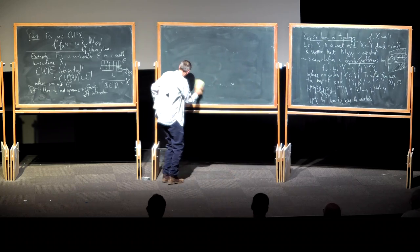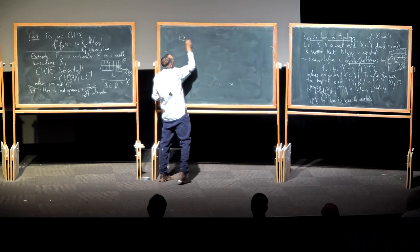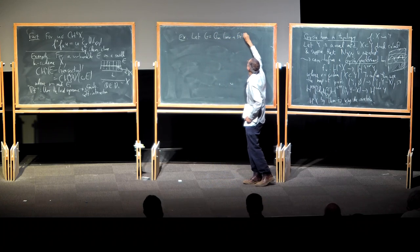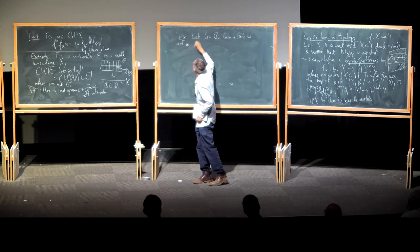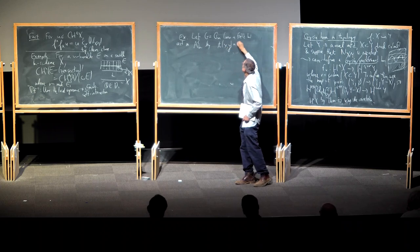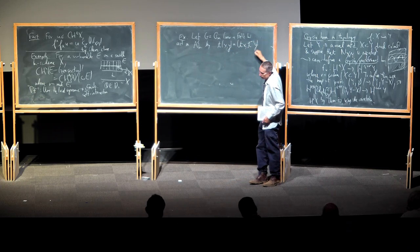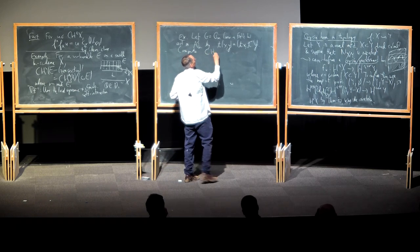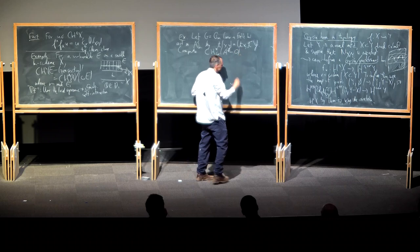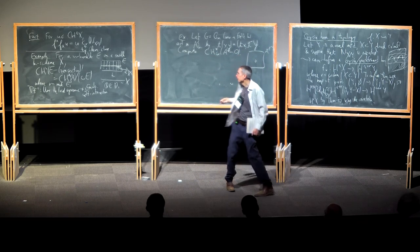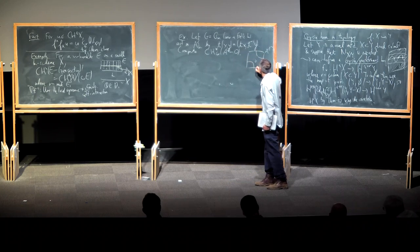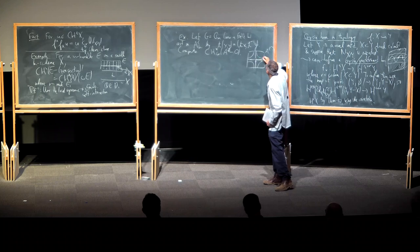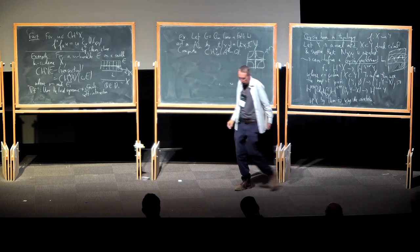I want to do an example from the last problem sheet. Let G be the multiplicative group over a field, and let it act on the affine plane A² over k by t·(x,y) = (tx, t^{-1}y). You could modify this with any powers of t. The orbits for this action are typically hyperbolas, except for the x-axis minus the origin, the y-axis minus the origin, and the origin itself — though we're throwing out the origin. The problem is to compute the equivariant Chow ring of A² minus the origin.